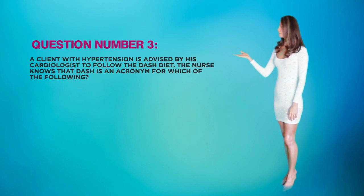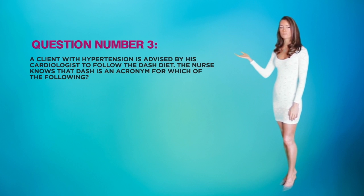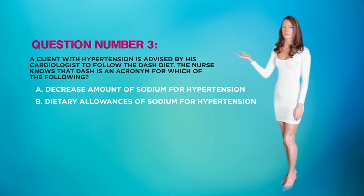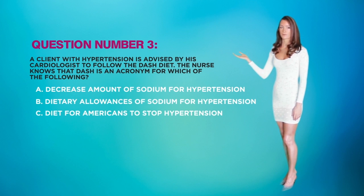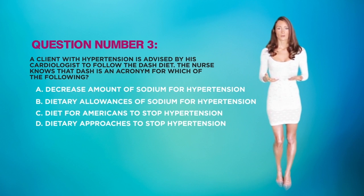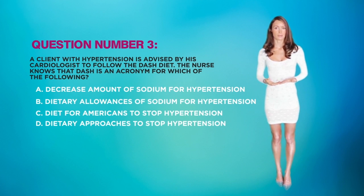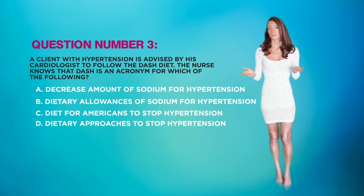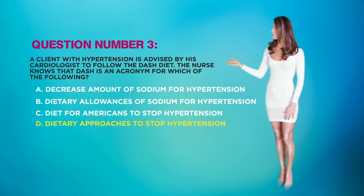Question three: A client with hypertension is advised by his cardiologist to follow the DASH diet. The nurse knows that the DASH diet is an acronym for which of the following? A) Decrease Amounts of Sodium for Hypertension, B) Dietary Allowances of Sodium for Hypertension, C) Diet for Americans to Stop Hypertension, or D) Dietary Approaches to Stop Hypertension. One of the first lines of defense to control hypertension is diet modification, primarily by lowering sodium intake. The DASH diet focuses on healthy eating and non-salty ways to add flavor. The correct acronym is Dietary Approaches to Stop Hypertension, making D the correct answer. In the next video, we will look at the electrolyte potassium.